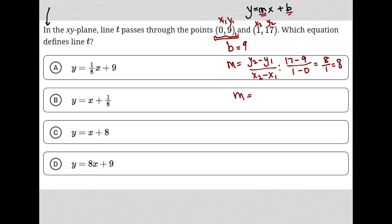Now I know that my m value equals 8. I'm going to plug my m value in, as well as my b value. What I get is y equals 8x plus 9. That is my answer. Therefore, choice D is the correct answer.